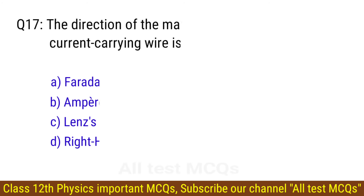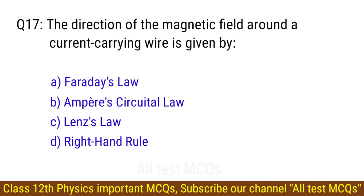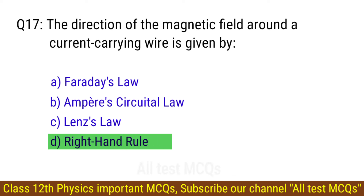Question number 17. The direction of the magnetic field around a current-carrying wire is given by? The correct answer is option D: Right-hand rule.